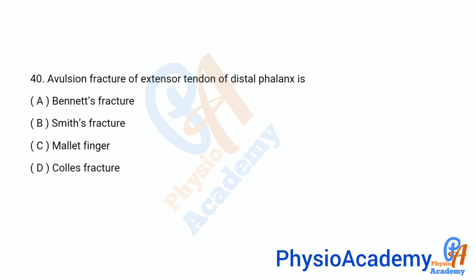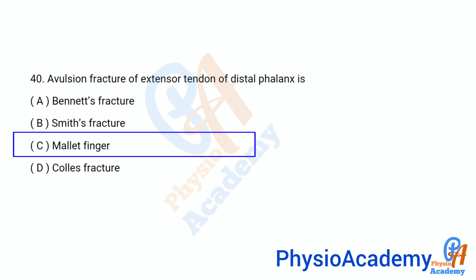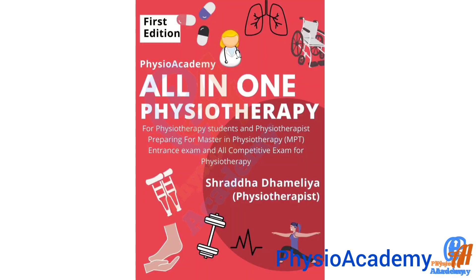Question number 40: Avulsion fracture of the extensor tendon of the distal phalanx is: option A Bennett's fracture, option B Smith fracture, option C mallet finger, option D Colles fracture. The correct answer is option C, mallet finger.